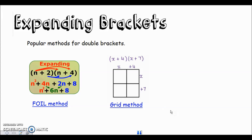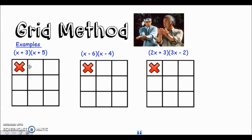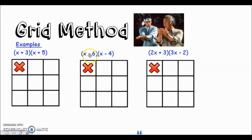Let's look at how you use the grid method with double brackets. With the first example, x plus three: the x goes in the first box along the top and the plus three goes in the second box. In the column, the first box is for x and the second box for plus five. I've put some minus numbers in the second example because it's important to know that the sign belongs to the number in front of it - so minus six goes in the second box.